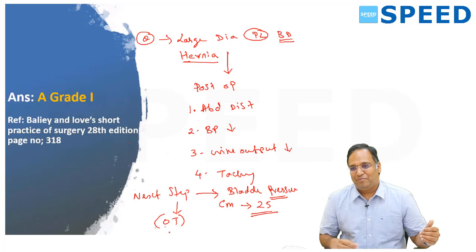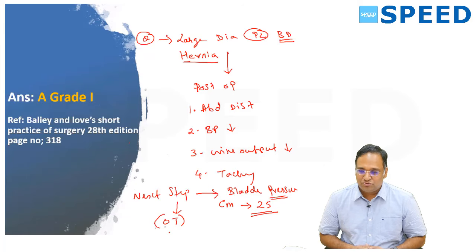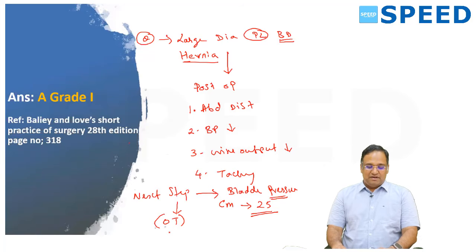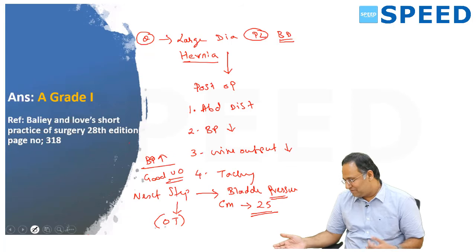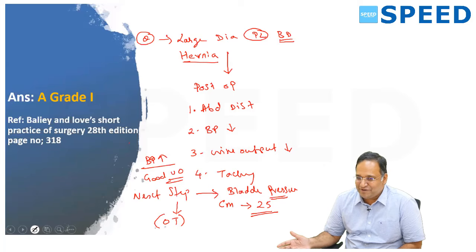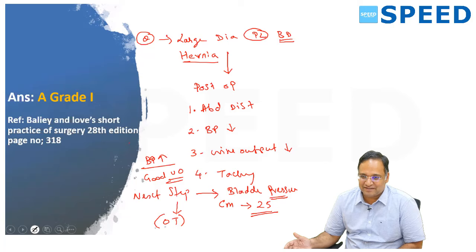Abdominal compartment syndrome is gradually progressing. Once you open up the abdomen, the BP which was 90/60 or 80/60 will shoot up to 110/80 or 120/90. Immediately you will have good urine output. If there were only a few ml in the urobag, you will see 1.5 to 2 liters of urine immediately because the compression would have first affected renal perfusion, compression of the ureters, and venous return via the IVC.